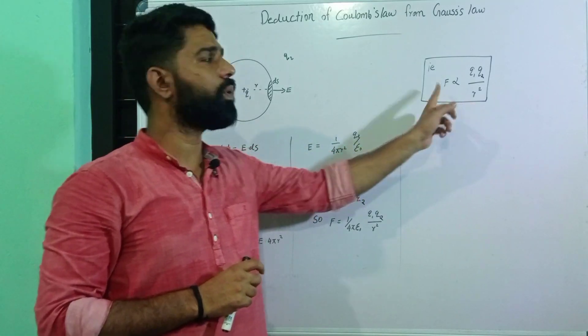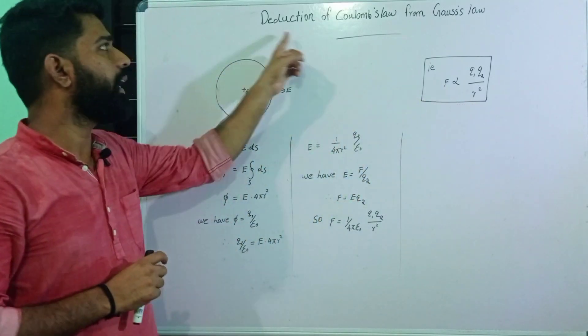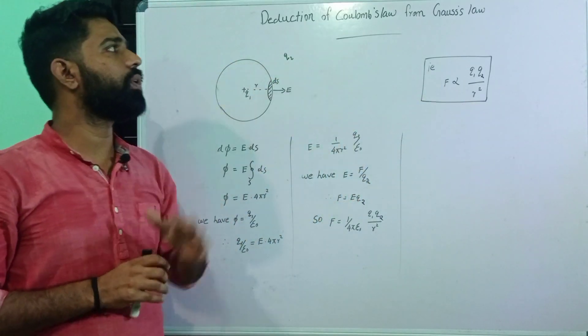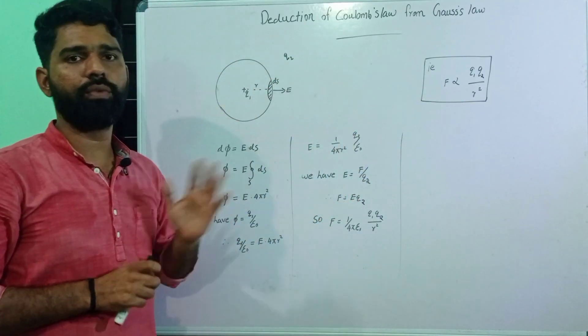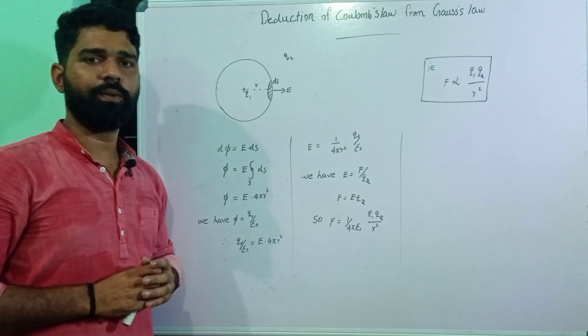So this is the derivation of Coulomb's law from Gauss's law. Clear?